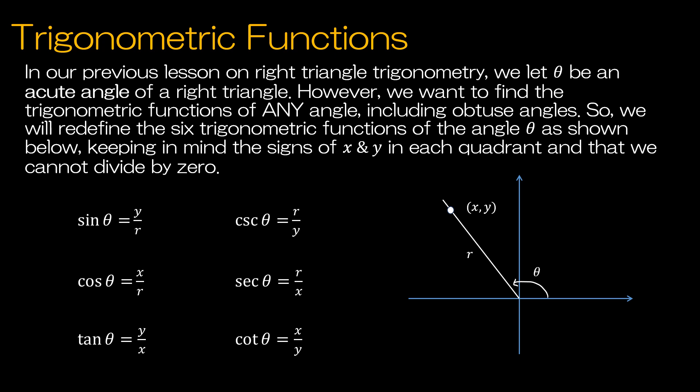Instead of using the unit circle where we previously said that sine of theta is equal to y, now we're saying we've got a circle — not necessarily a unit circle — and therefore instead of r being 1, we actually have to divide by the radius. If you were more familiar with the unit circle, think about the unit circle being multiplied by r. This is actually called a reference angle, where this value is x — in this case a negative x value — this value is y because it's positive, and then we compute the value of r using the Pythagorean theorem.